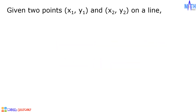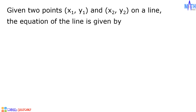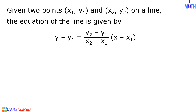Given the two points x sub 1, y sub 1 and x sub 2, y sub 2 on a line, the equation of the line is given by y minus y sub 1 equals y sub 2 minus y sub 1 over x sub 2 minus x sub 1 times quantity x minus x sub 1. This is called the two-point form of the equation of the line.